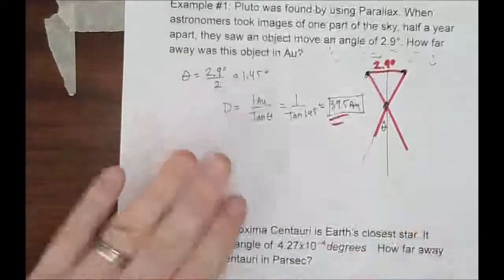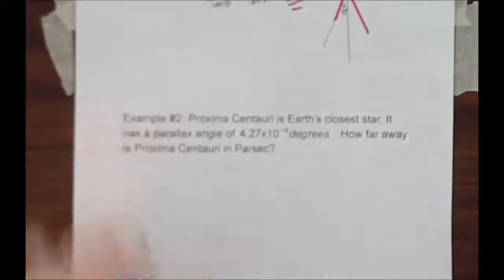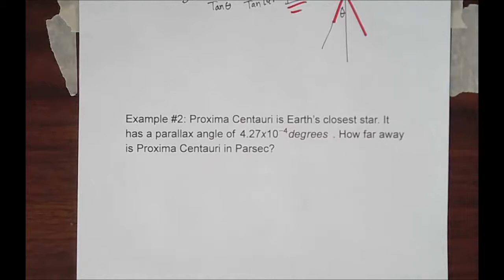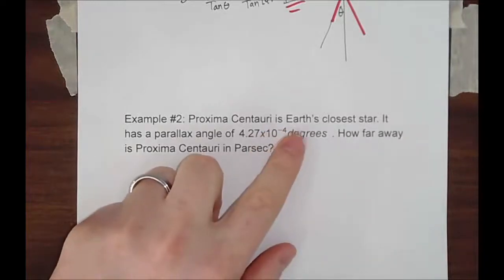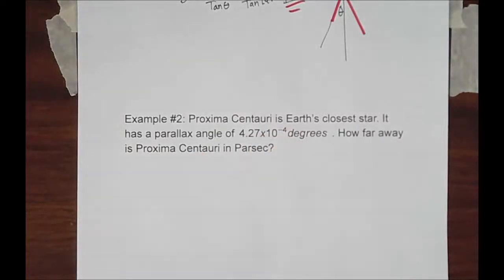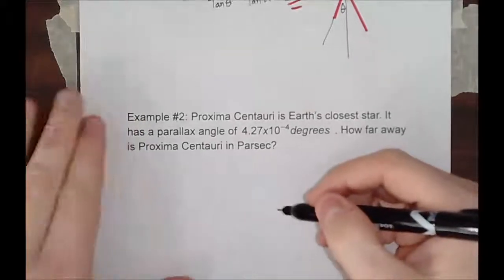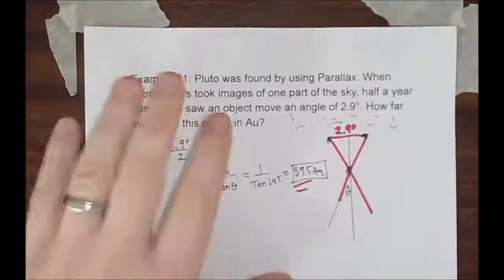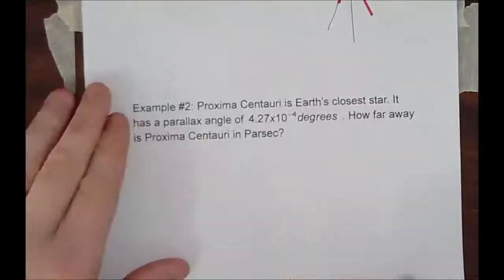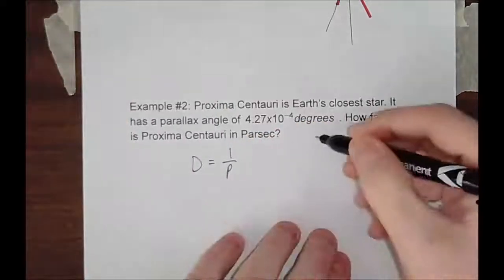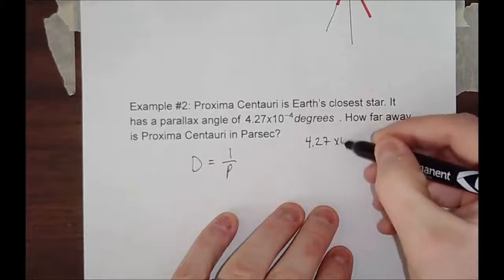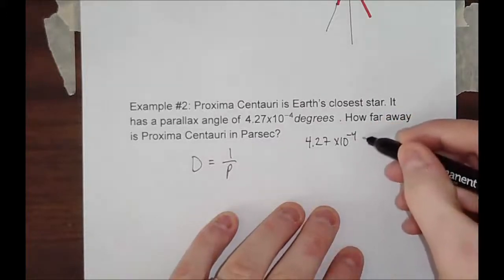Let's do a stellar one. Let's do a stellar parallax. Now, Proxima Centauri is Earth's closest star. It has a parallax angle of 4.26 times 10 to the negative fourth degrees. It's a very, very small degree. How far away is Proxima Centauri in parsecs? So, this is the same thing, in essence, and you can do this multiple ways. But, my rule of thumb is that the object is not in our solar system. Traditionally, we're going to do the parsec equation one, which is just 1 over the parallax angle. So, now we've got 4.27 times 10 to the negative fourth degrees, and we need to convert that to arcseconds. Remember, in 1 degree, so 1 degree, there are 3600 arcseconds.